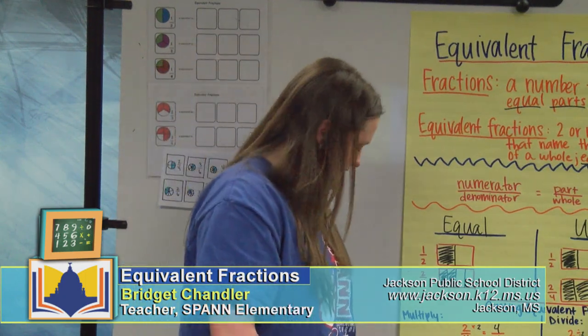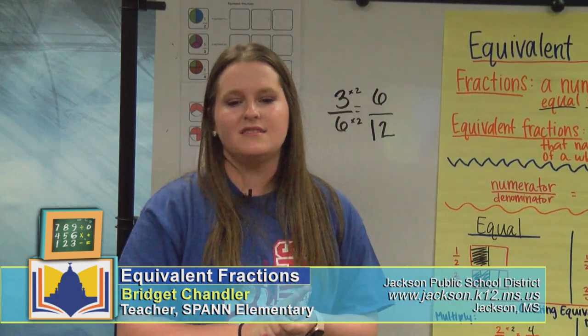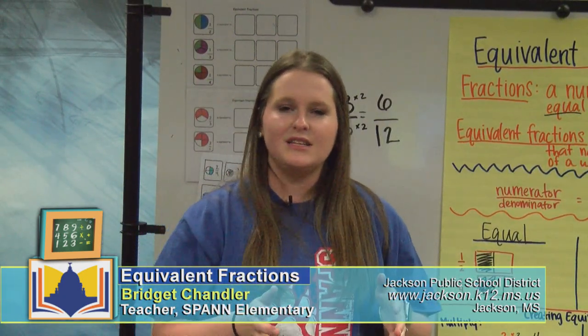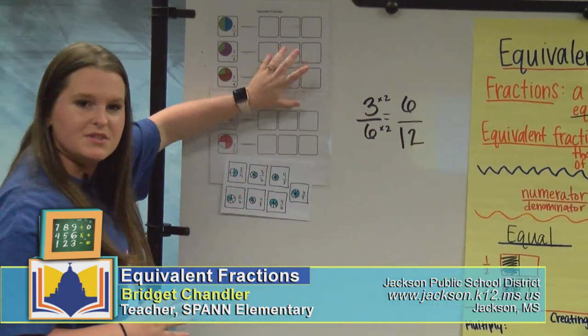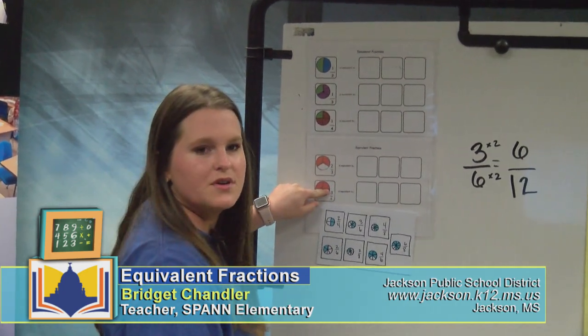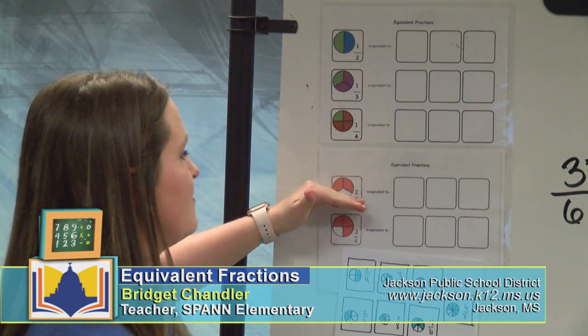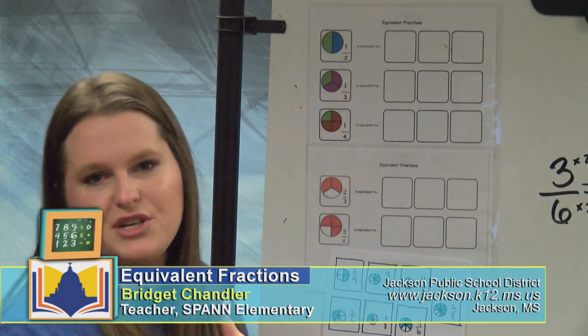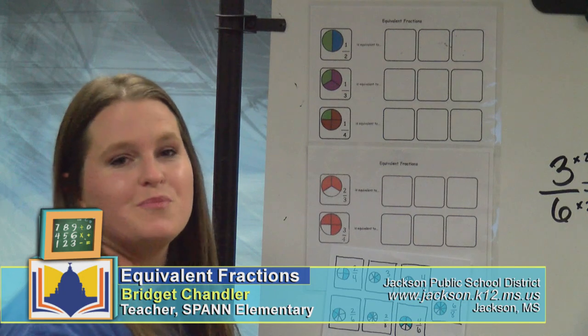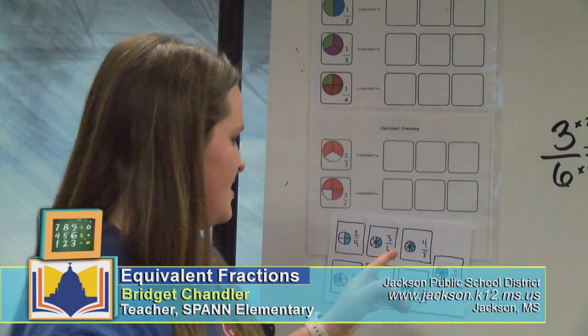I want to give you something to do at home: an equivalent fraction matching game. You can use construction paper, notebook paper, or any paper you have. Create a board with five base fractions: one-half, one-third, one-fourth, two-thirds, and three-fourths. You can include pictures — I'm a visual person and I think the picture helps. Then create pieces by drawing out seven squares with fractions and matching pictures.